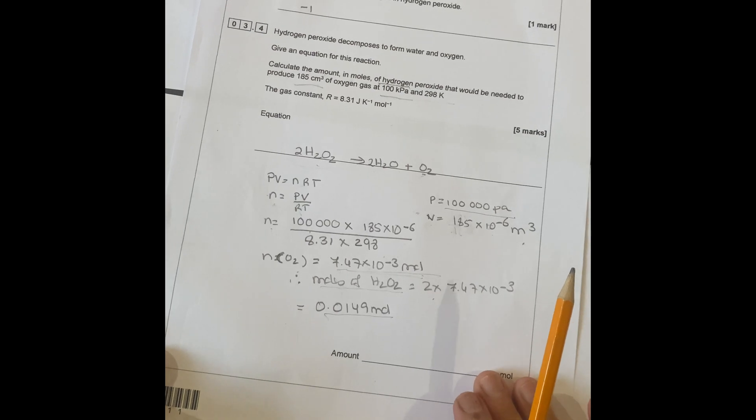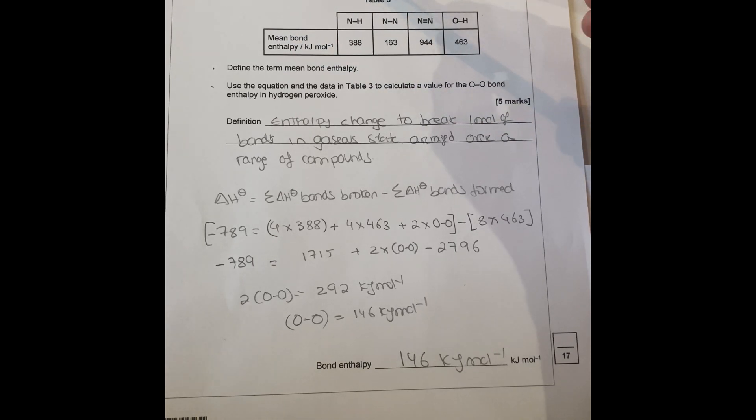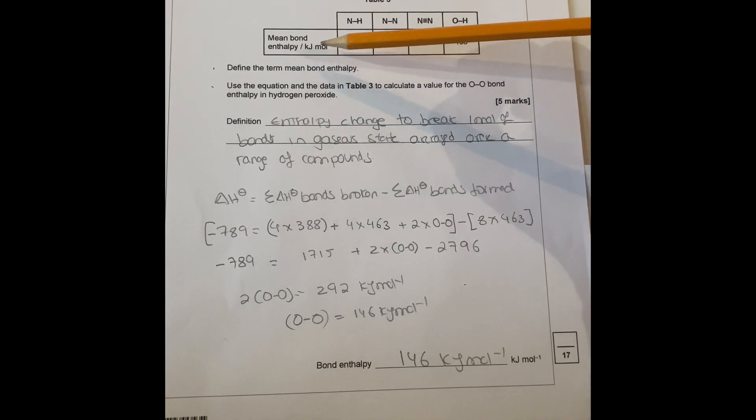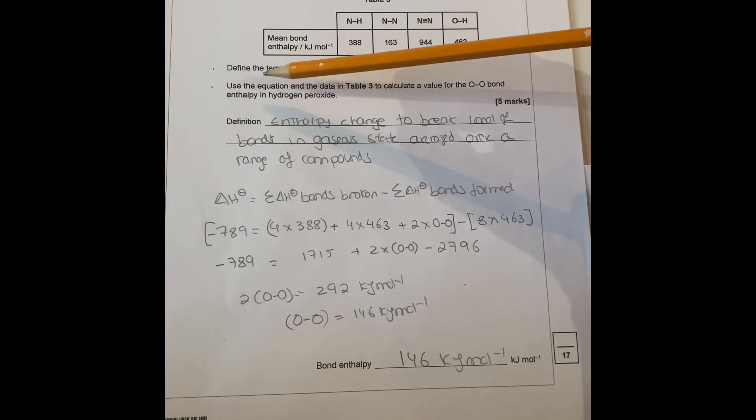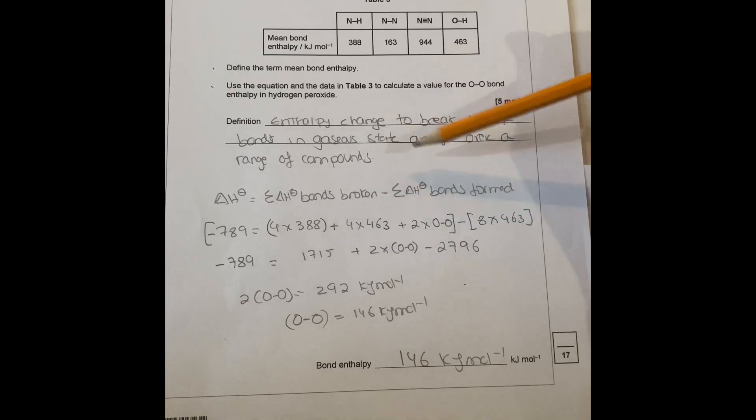The last question, part 3.5, is hydrazine N2H4 is used as rocket fuel that is oxidized by hydrogen peroxide. Equation for this reaction in the gas phase. The entropy change for the reaction is minus 789 kilojoules per mole. I'll give you the mean bond enthalpy here.